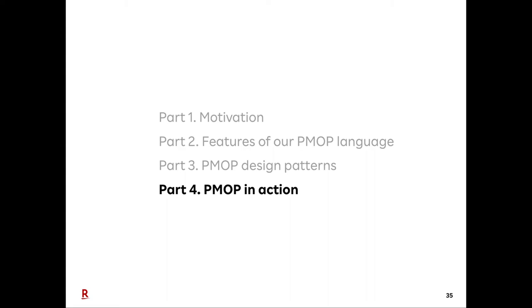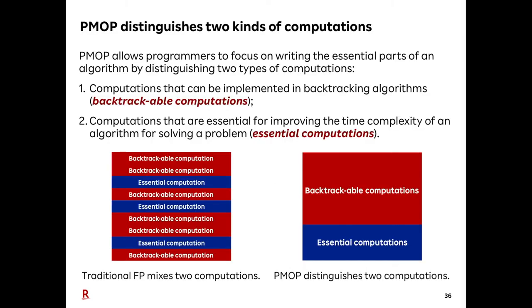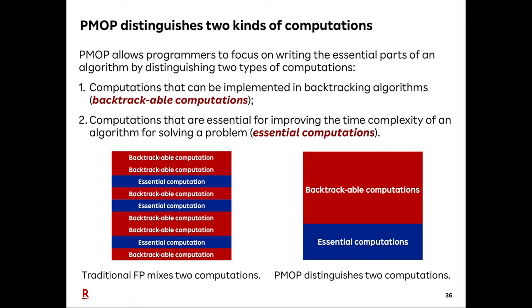Next, let us see how PMOP changes programming in practical situations. PMOP allows programmers to focus on writing the essential part of an algorithm by distinguishing two types of computations: backtrackable computations and essential computations. Backtrackable computations are those that can be implemented as backtracking algorithms. Essential computations are those essential for improving the time complexity of an algorithm. In traditional programming, we describe both by recursive functions and mix them. In PMOP, backtrackable computations are confined in patterns, and recursive functions are only used for essential computations. This distinction improves the readability of programs.